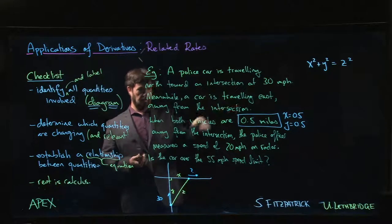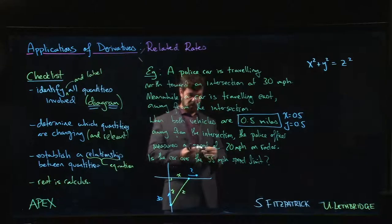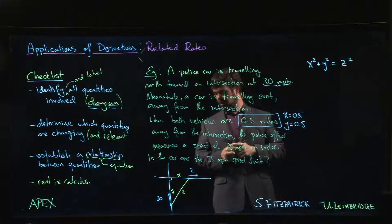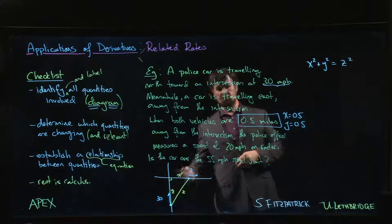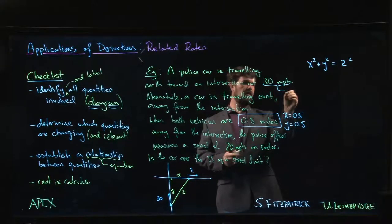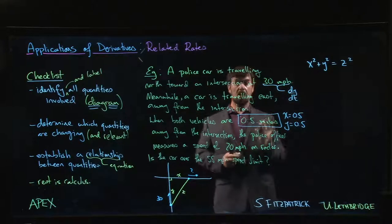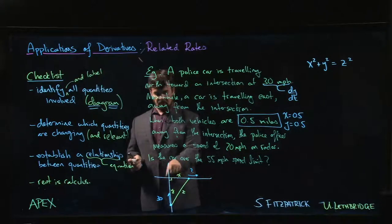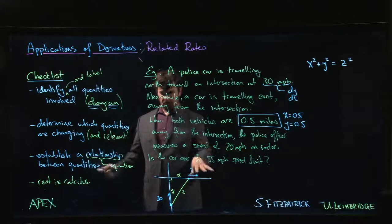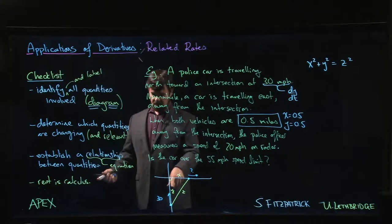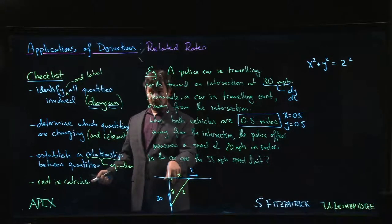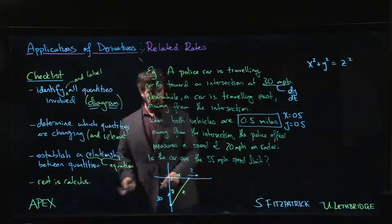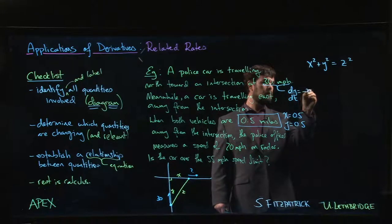Now what else do we know? 30 miles per hour. This is the rate at which the police officer is moving, which is the rate at which y is changing. So this tells me dy/dt. But we have to be a little bit careful here. Don't think of these as coordinates—think of them as distances. Ask yourself: is that distance getting smaller or bigger? Well, the car is moving towards the intersection, so we're getting closer, the distance is getting smaller. So that means that dy/dt should be -30.